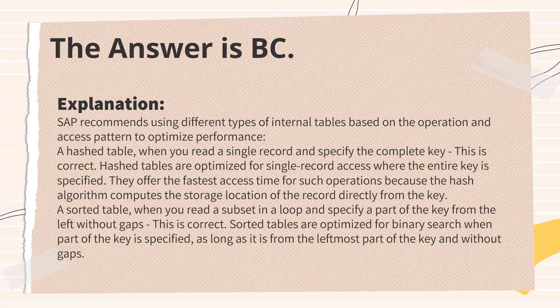The answer is B and C. SAP recommends using different types of internal tables based on the operation and access pattern to optimize performance. Hashed tables are optimized for single record access where the entire key is specified, offering the fastest access time because the hash algorithm computes the storage location directly from the key. Sorted tables are optimized for binary search when part of the key is specified, as long as it is from the leftmost part of the key and without gaps.